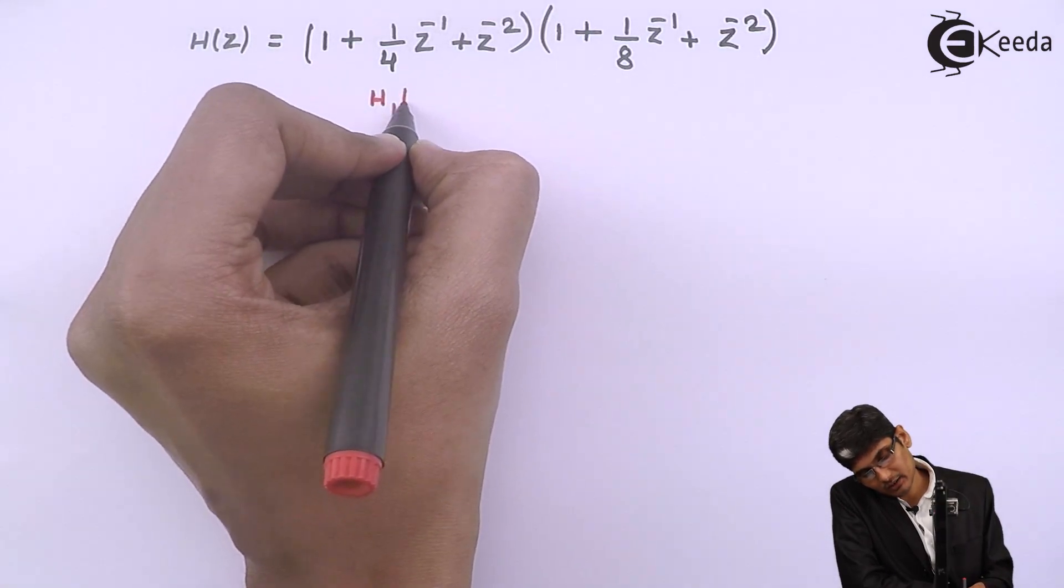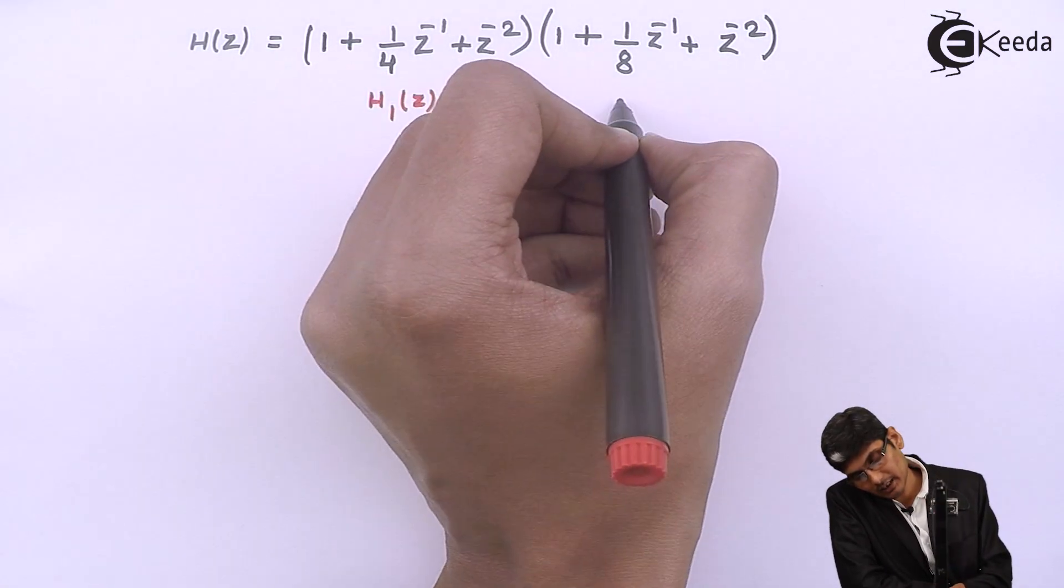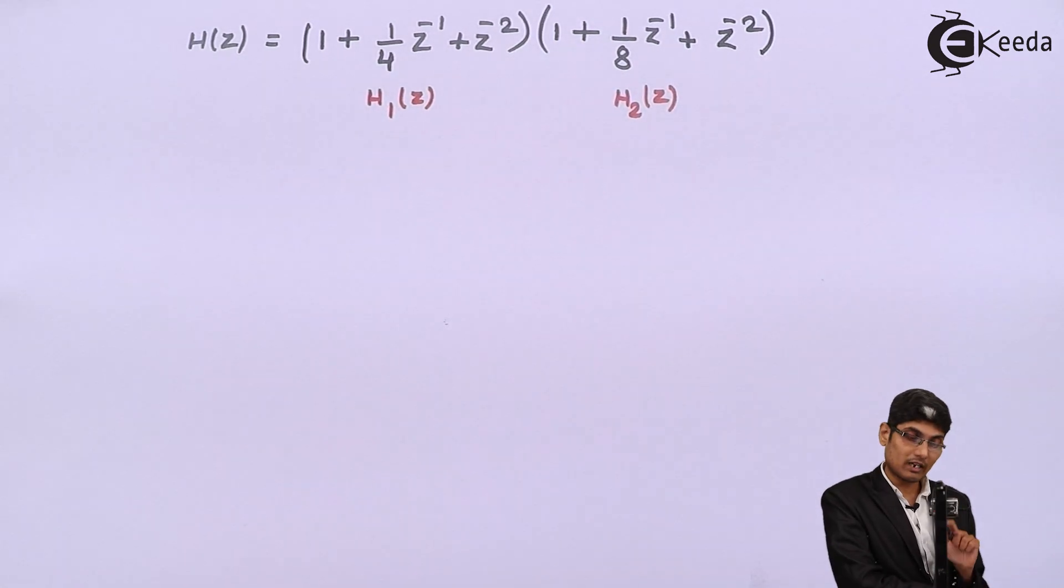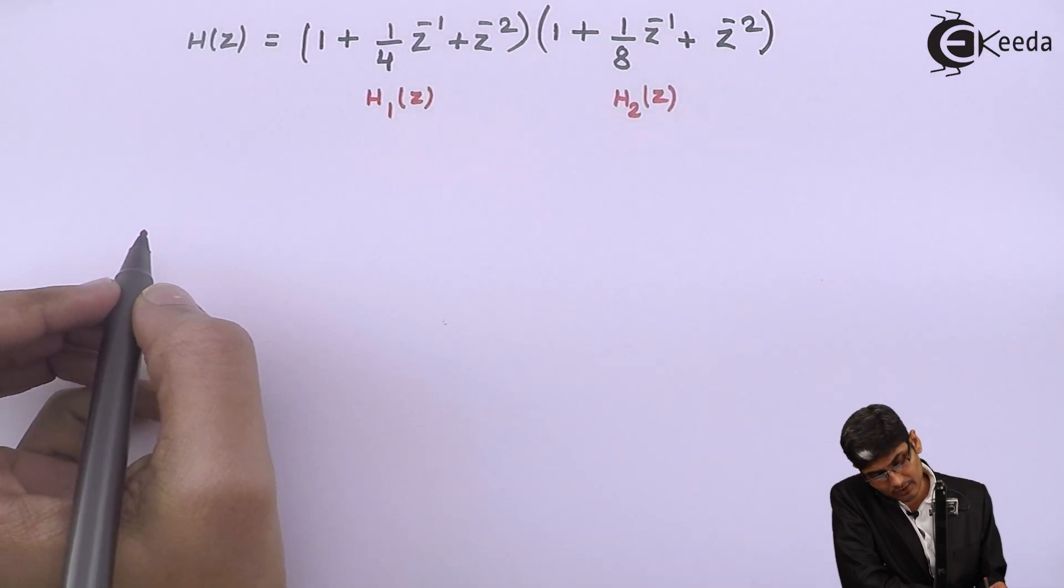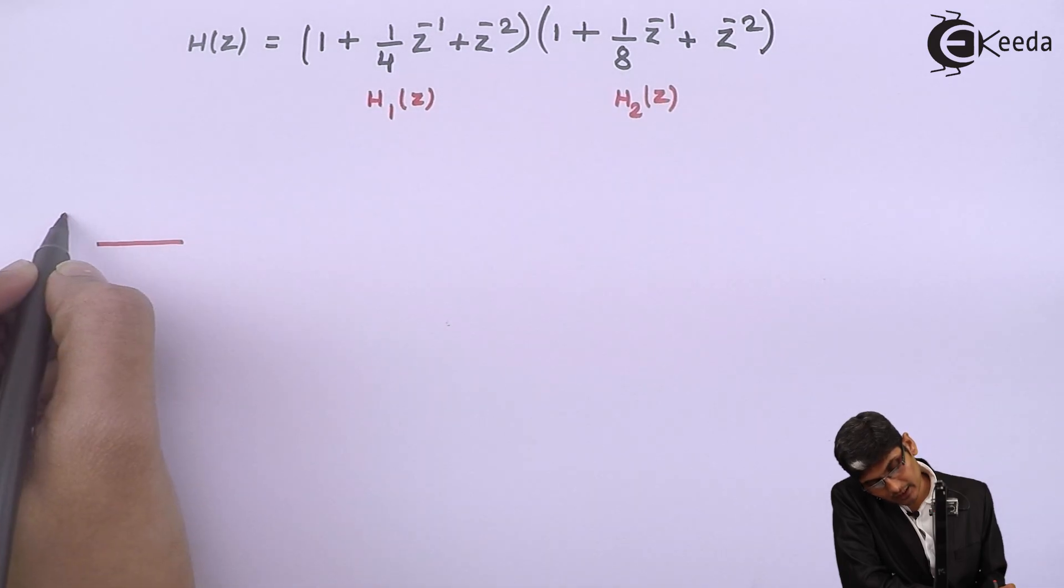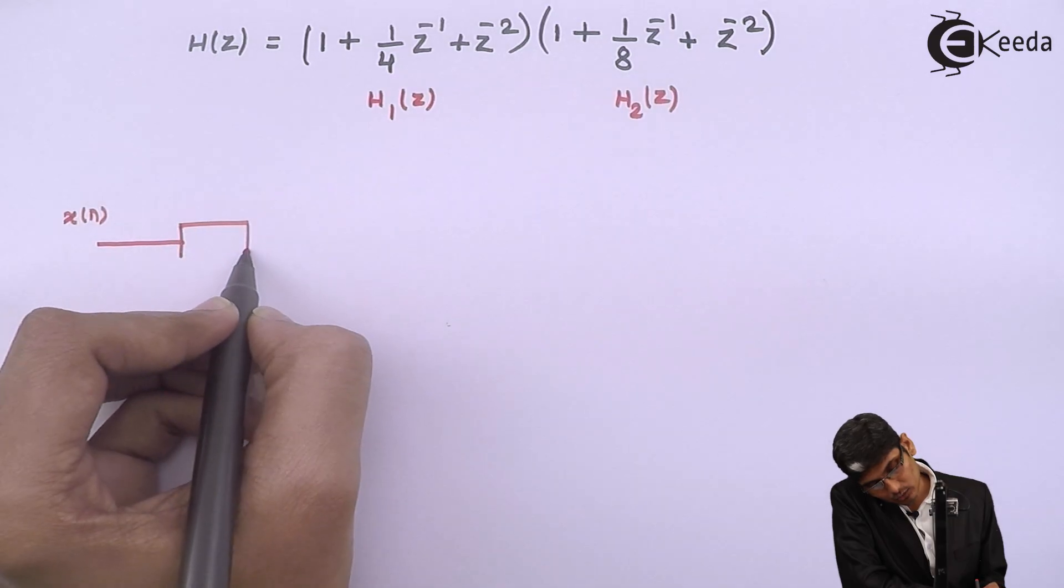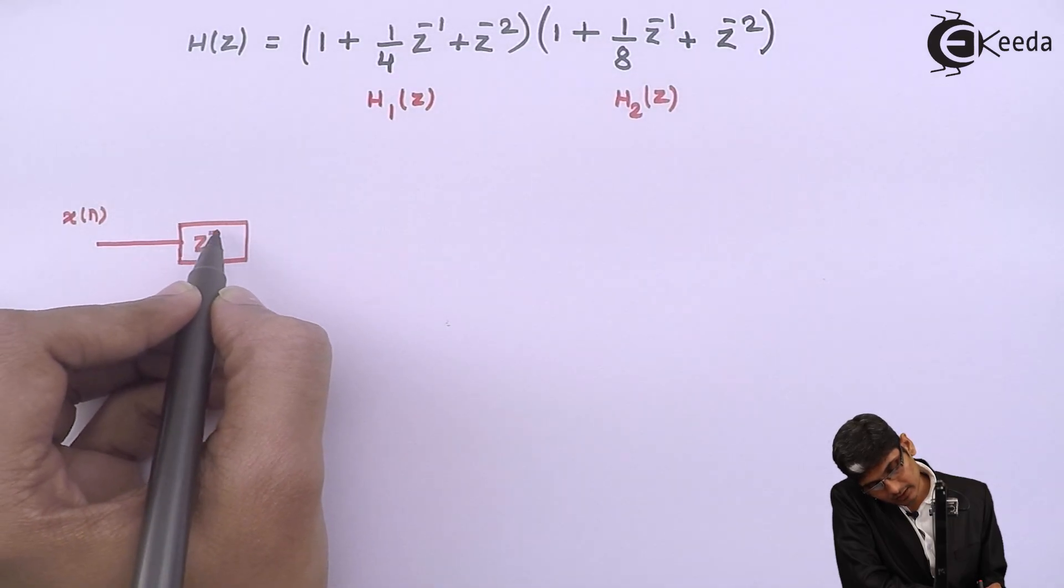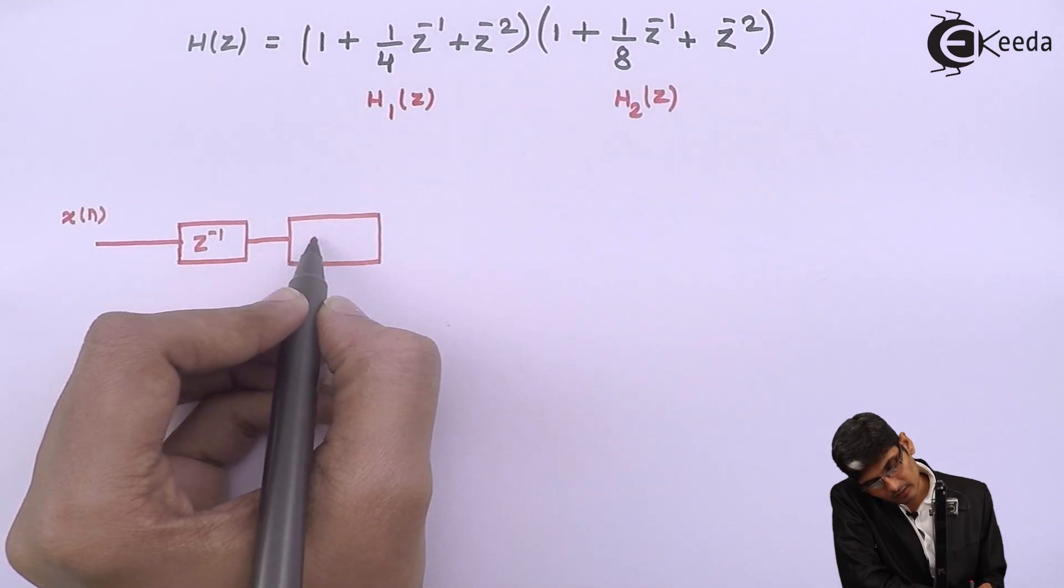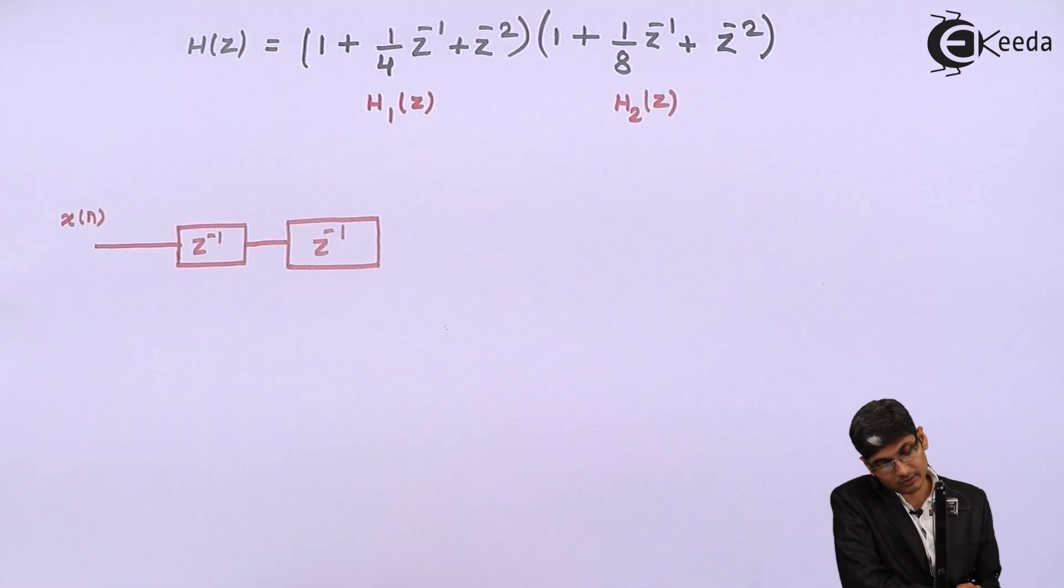I will say that this is my H1 of Z and this will be my H2 of Z. So we have two systems. Now H1 of Z I will realize using, let us say I gave my input as X of N and then I have two delay blocks. This is Z inverse and again we have a second Z inverse.